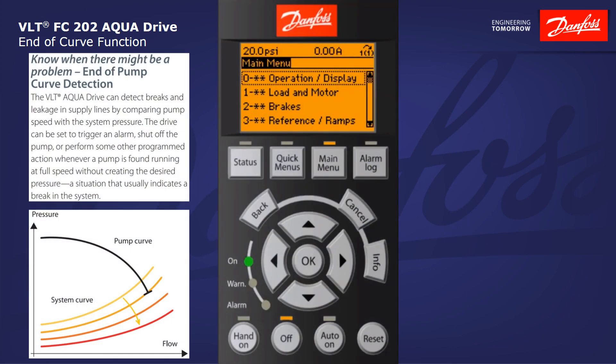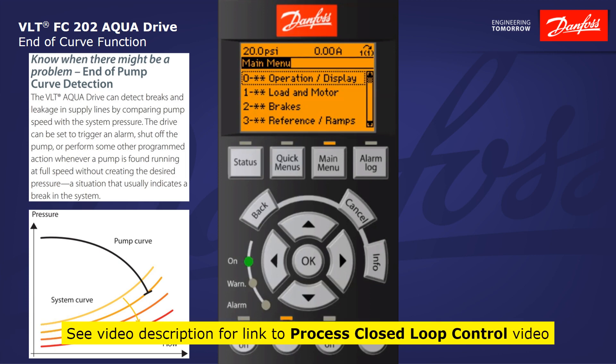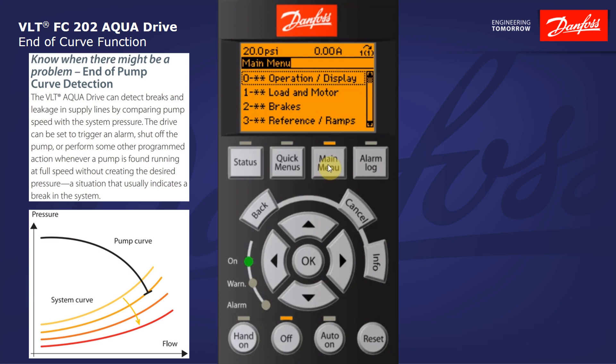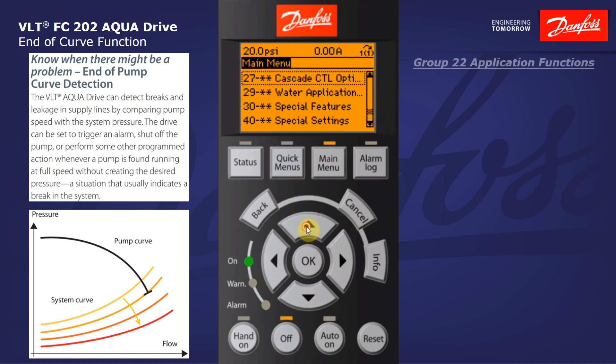Using our pump demo unit I'm going to guide you through the parameters required to set this function up. Prior to doing so, it's important to note that in order to enable and implement this function you must first set the drive up for process closed-loop control with transducer feedback. If you're unfamiliar on how to do so, you can refer to my YouTube instructional video on that subject. Once the drive is properly configured for process closed-loop control, we can use the main menu to enter parameter group 22 application functions.